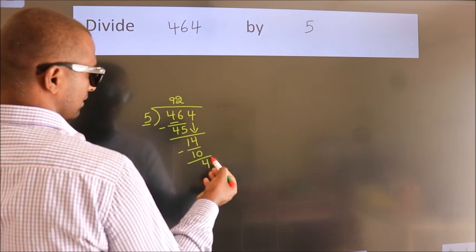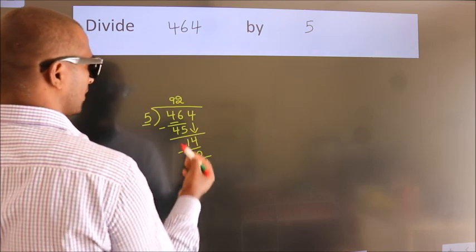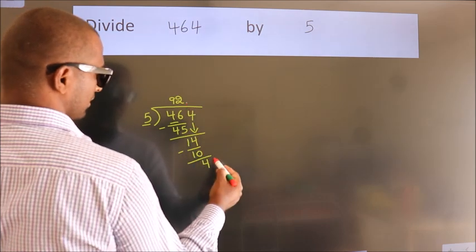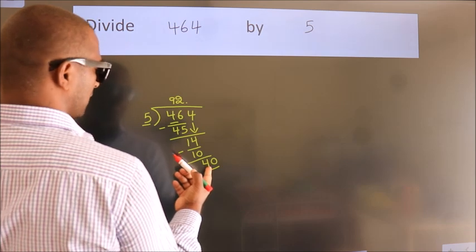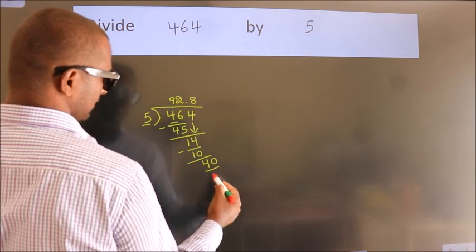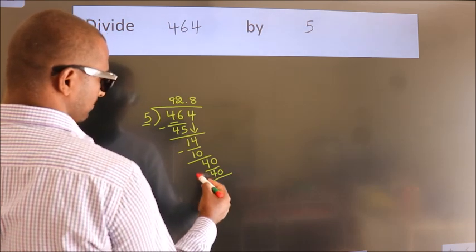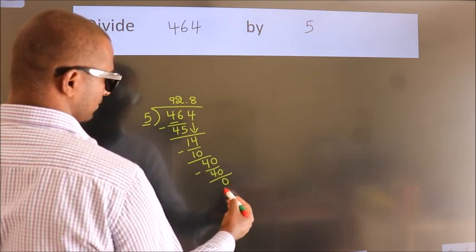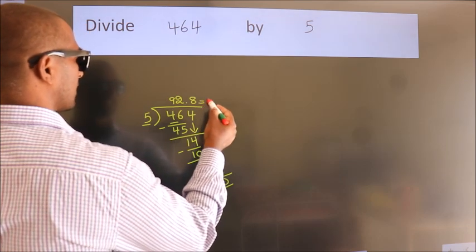After this, no more numbers to bring it down. So what we do is we put dot, take 0. So 40. When do we get 40 in 5 table? 5 8s, 40. Now we subtract. We get 0. We got remainder 0. So this is our quotient.